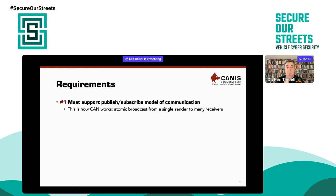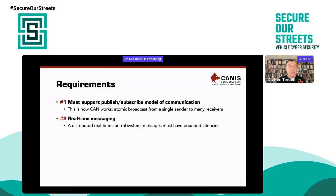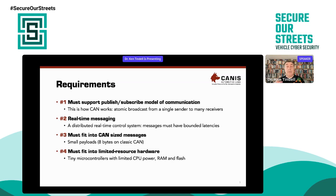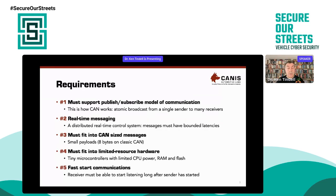We have some very specific requirements for CAN communication. Number one: we must support the publish-subscribe model. This is how CAN works — there's atomic broadcast from a single sender to many receivers, and the receivers don't know much about the sender. CAN is a distributed real-time control system, so all messages must have bounded latencies. We must fit into CAN-size messages: small payloads, just eight bytes on classic CAN. And we must fit any solution into limited-resource hardware — tiny microcontrollers with limited CPU, RAM, and flash memory.